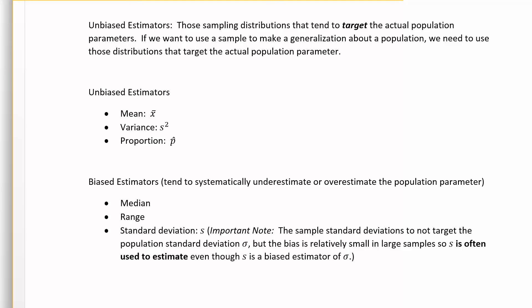Why did we focus on mean, variance, and proportion? They're called unbiased estimators. An unbiased estimator has a sampling distribution that tends to target the actual population parameter. If we find the mean of the means it targets the population mean, same with variance and proportions. If we want to use a sample to generalize about a population — which is the goal of statistics — we need distributions that target the actual population parameter.